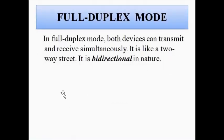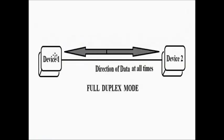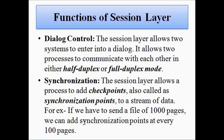In full-duplex mode, it is bi-directional and both devices can transmit as well as receive at the same time simultaneously. There is bi-directional flow of data at all times — no time-slot restriction. Device one can transmit and receive at any time, and device two can transmit and receive at any time. This mode of communication is governed by the session layer, which is called dialogue control.